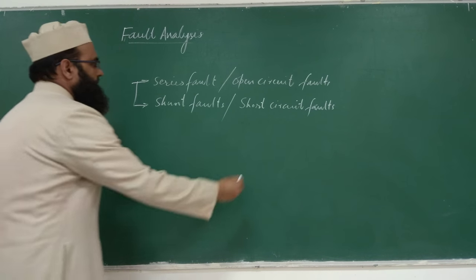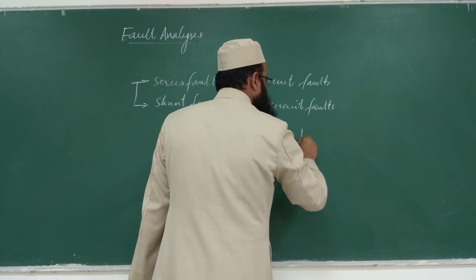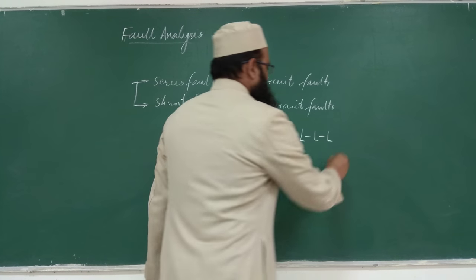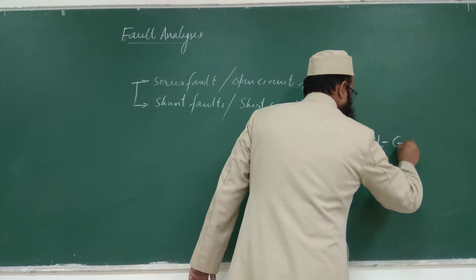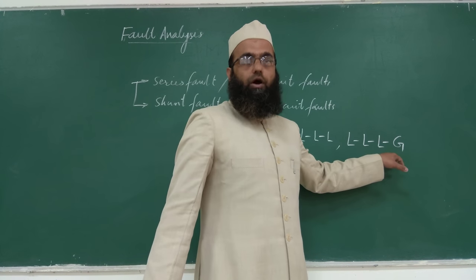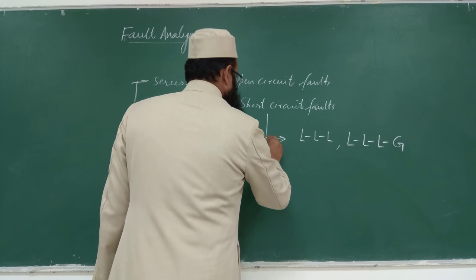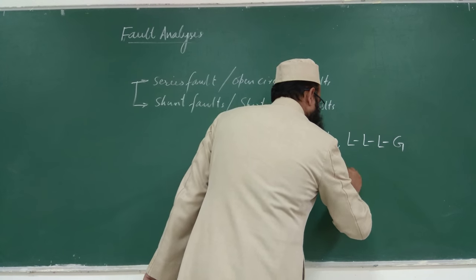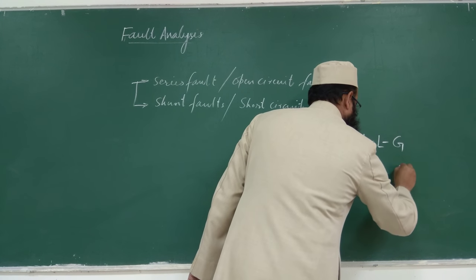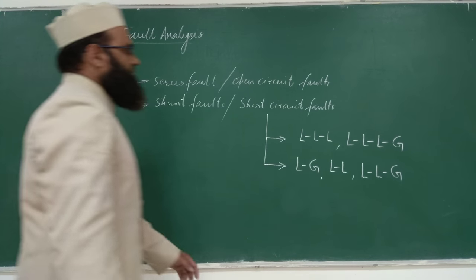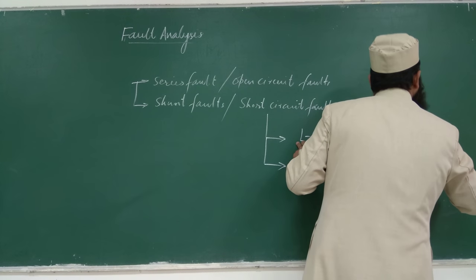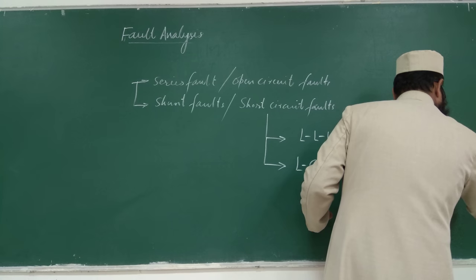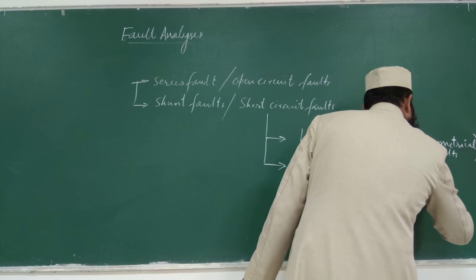Short circuit faults may be either all three lines short circuited — a triple L (LLL) fault — or all three lines short circuited with ground (LLLG fault). These are known as symmetrical faults. Other types include single line to ground (LG), line to line (LL), and double line to ground (LLG) faults, which are known as unsymmetrical faults.